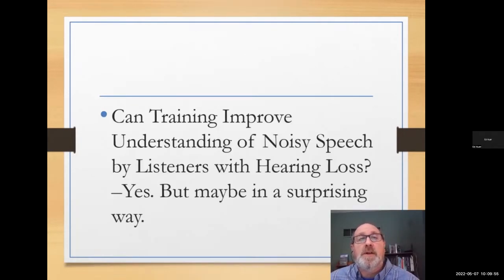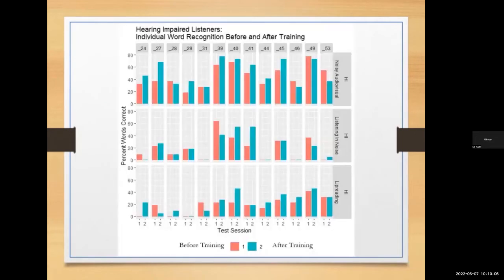First, we should tell you the answer to the question in our title: can training improve understanding of noisy speech by listeners with hearing loss? The answer is yes, but maybe in a surprising way. Here is a chart showing training results from 13 adults with hearing loss. The pink color shows word recognition before training, and the blue shows it after training. Most of these listeners improved their word recognition after training for about 30 minutes in eight sessions, and they did not train on the words that were tested.